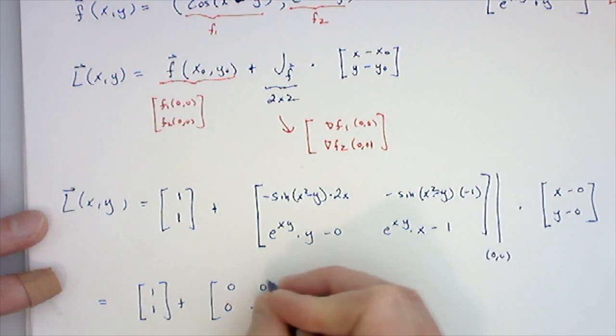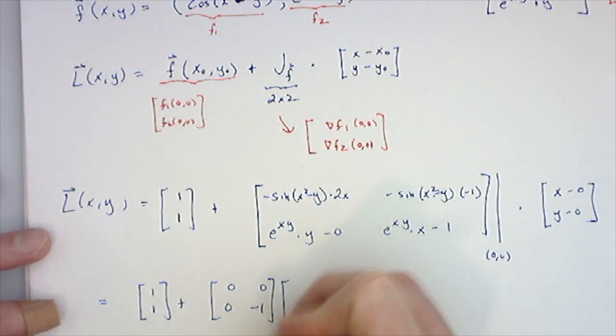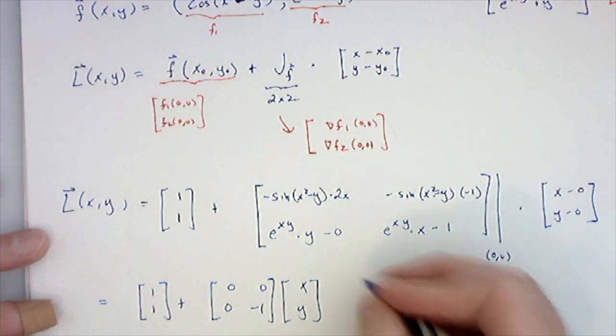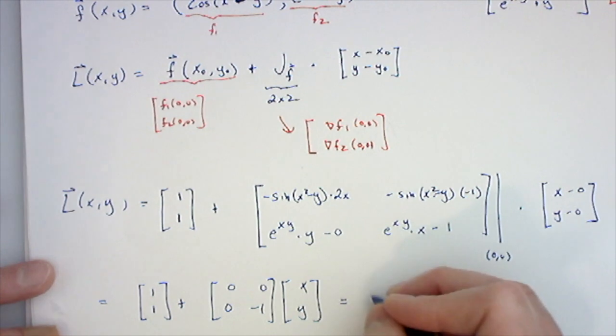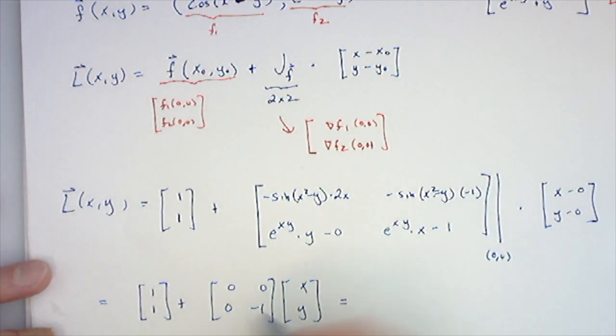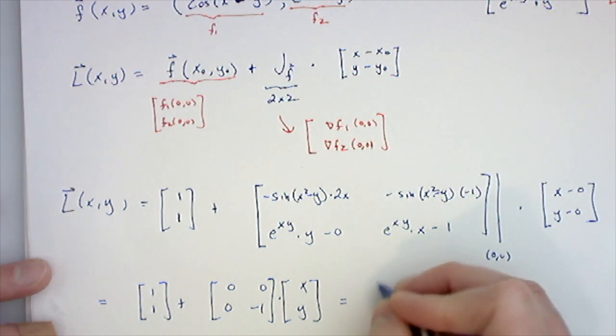e⁰ is 1 times 0 is 0, and e⁰ is 1 times 0... 0 minus 1 is -1. Oh good, our matrix isn't all zeros! So then our answer is... I would probably leave it like this, but you can write it out, so it's [1, 1] plus...